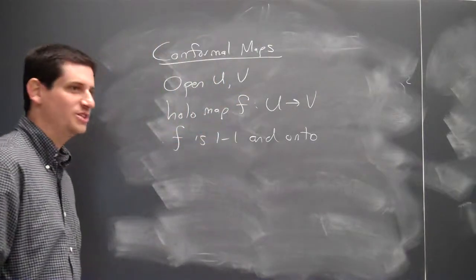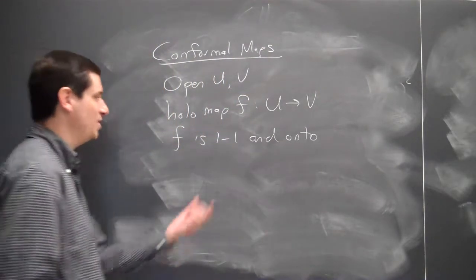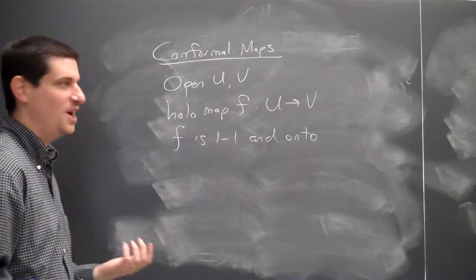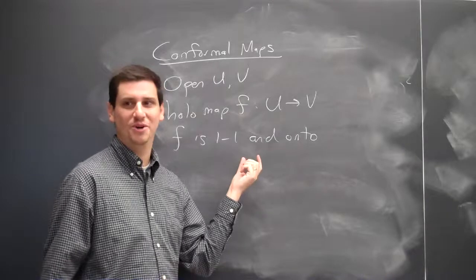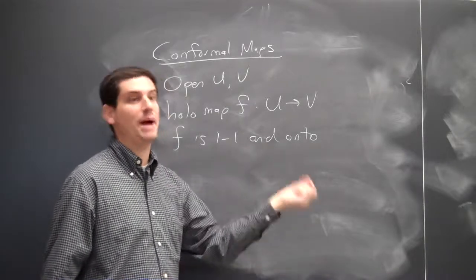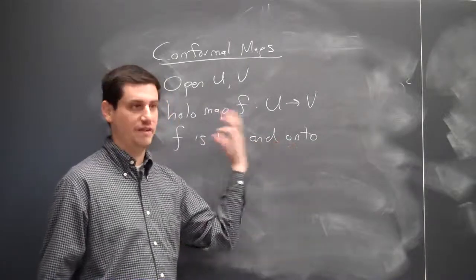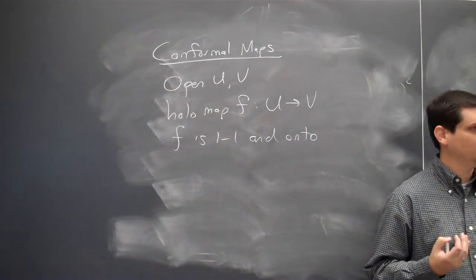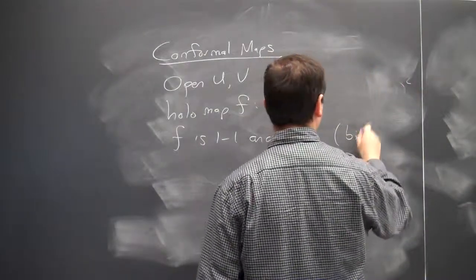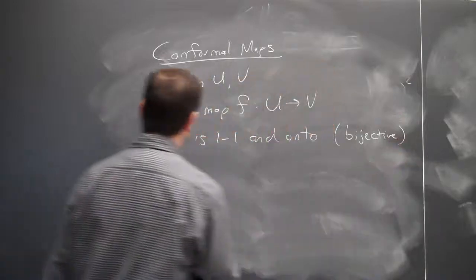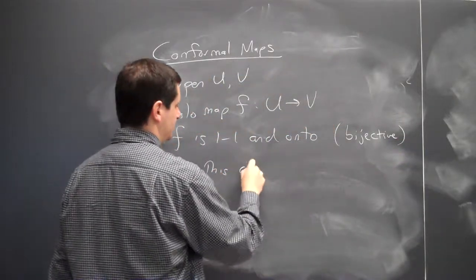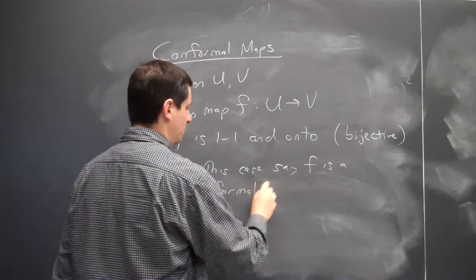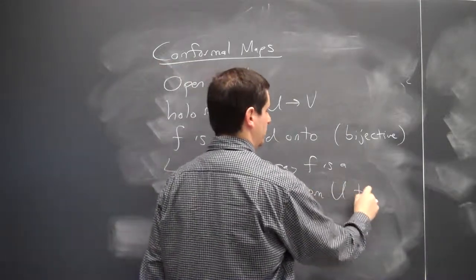If you're both injective and surjective, then you are bijective. You can see why that's a much better phrasing than one-to-one and onto — you have the injectiveness captured. But when you say one-to-one, it really drives home what you're talking about: no two points are mapped to the same point, and onto means everything is hit. So if this is both, we say it's bijective, and in this case we say F is a conformal map from U to V.